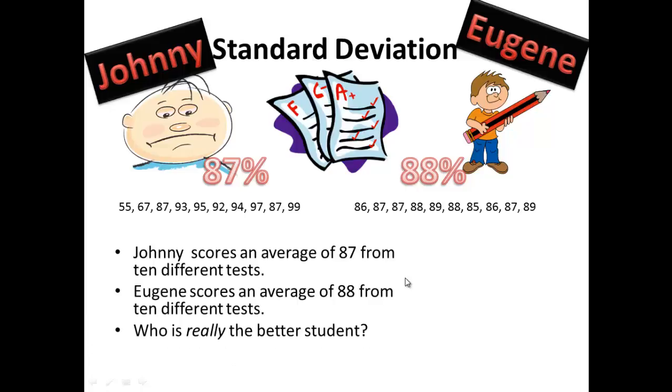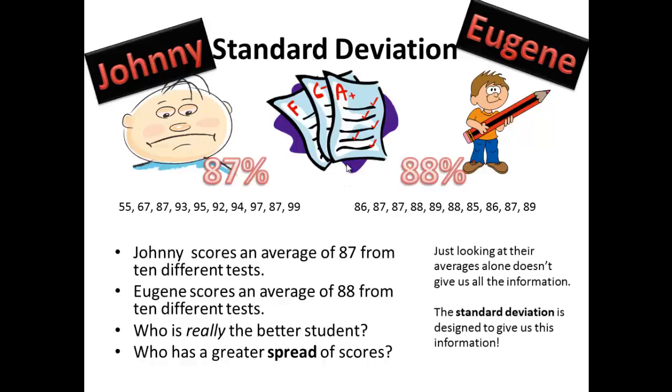So another way to look at this is, well, who has the greater spread of scores? Now, clearly, if the raw data is in front of you, you can see that Johnny clearly has the greater spread of scores. So what we can do is, besides just giving the average, we can give another number attached to the average that will give us a better idea of their actual performance. And that is called the standard deviation.